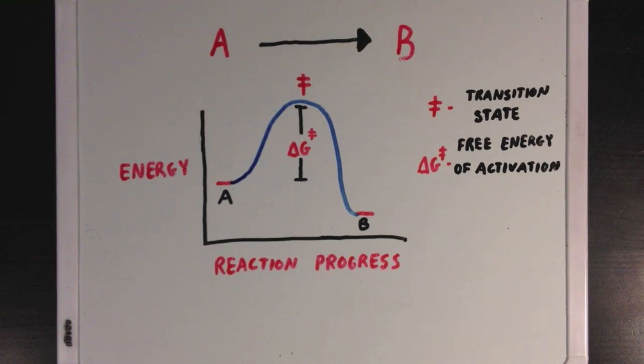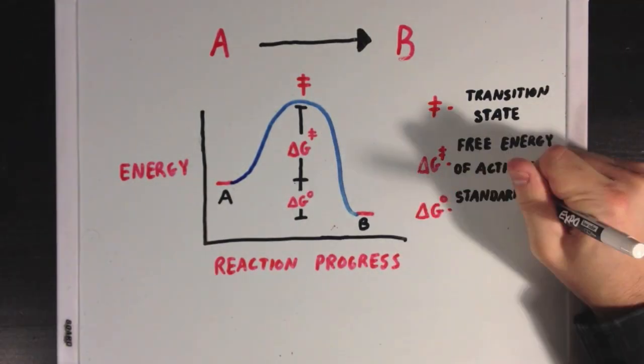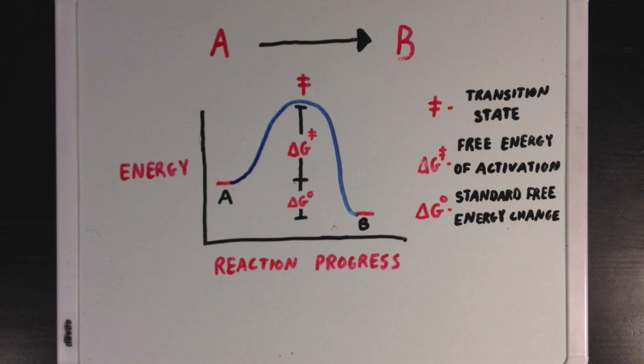You'll also notice that there is a difference in energy between point A and point B. And we call this the standard free energy change for the entire reaction. And it represents the net change in energy levels between our reactant and our product. And it's also the energy that is released into the environment once the reaction is over.